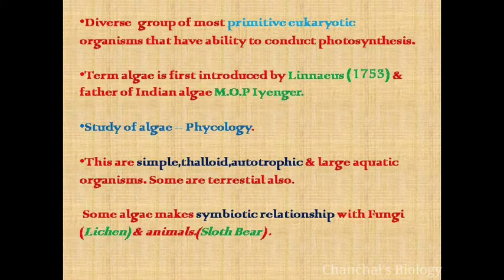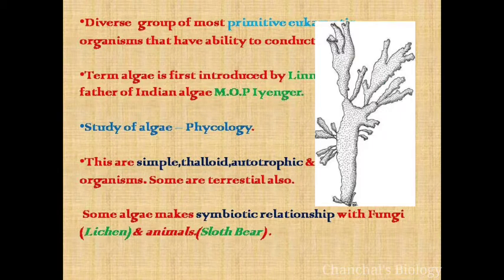Now what is thaloid? It is a plant body that is not differentiated into stems and leaves. They lack true roots and vascular system.